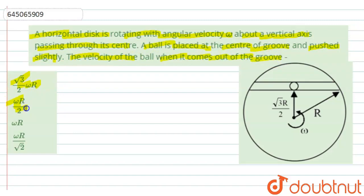The velocity of the ball when it comes out of the groove is - and the given options are root 3 by 2 omega r, omega r by 2, omega r, and omega r by root 2. So we are given a horizontal disk, and there is a groove made. This is the groove here and a ball is placed inside it, which is pushed slightly.